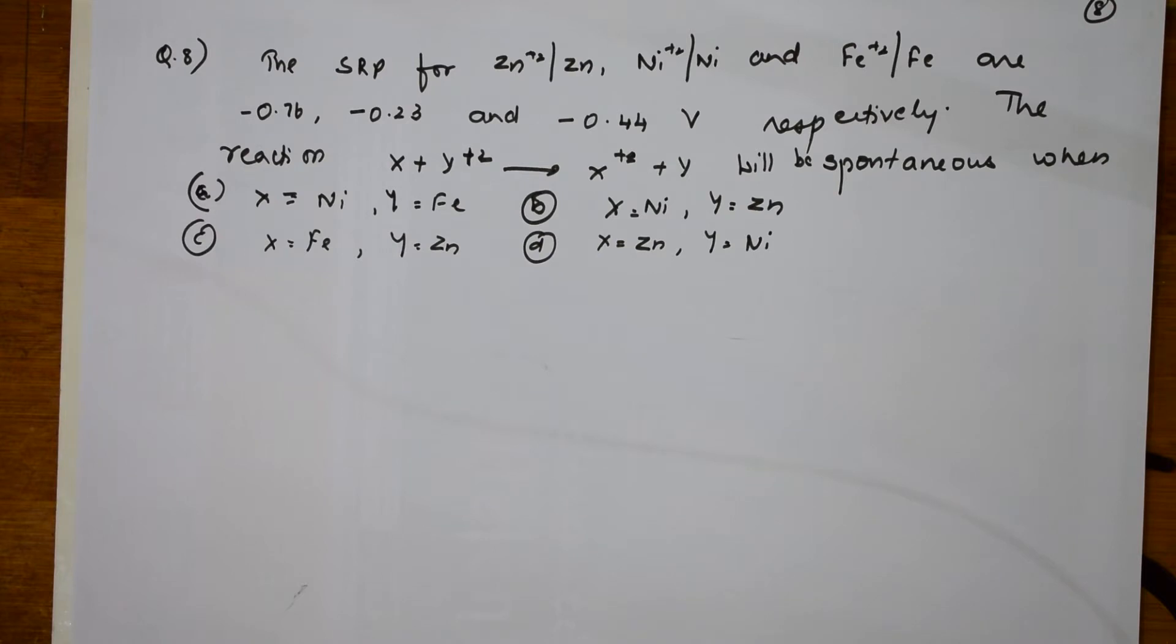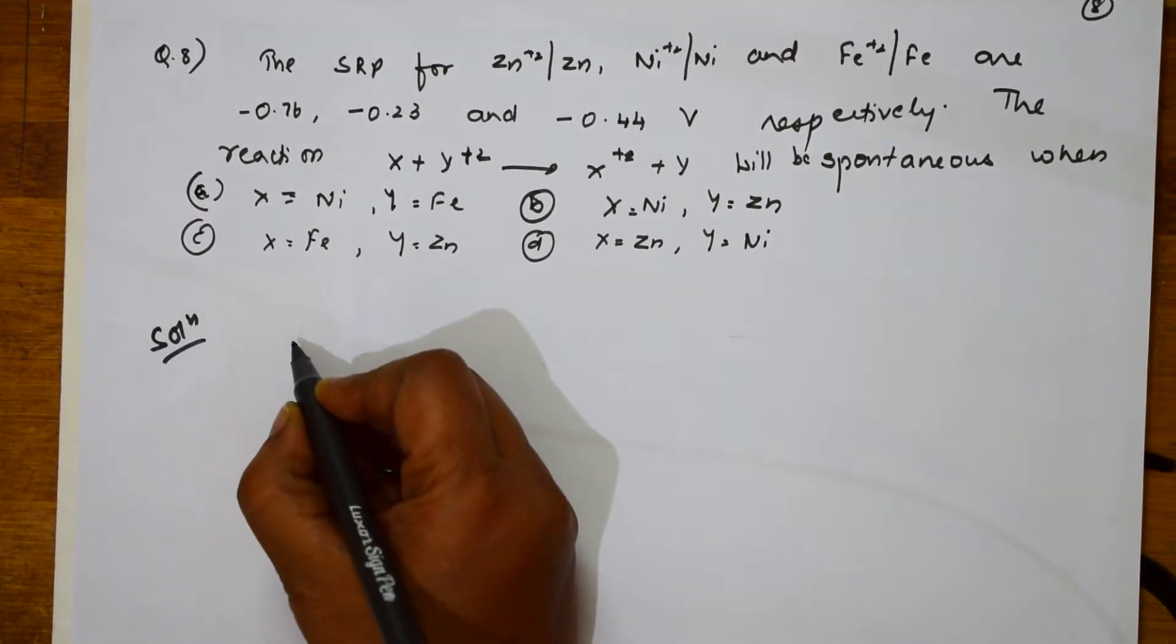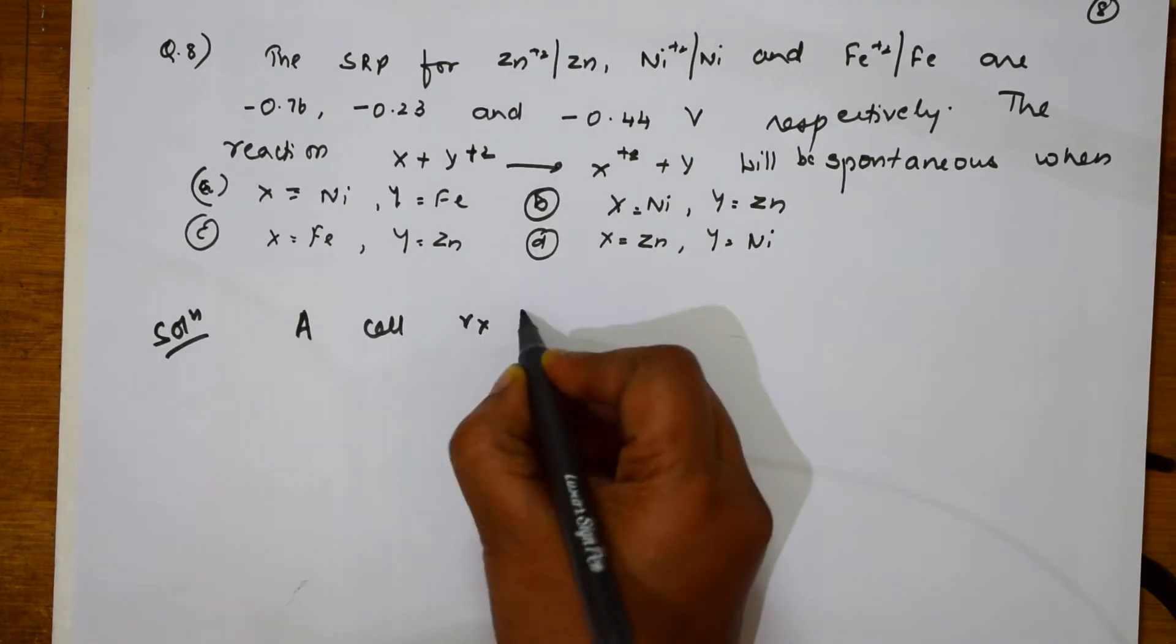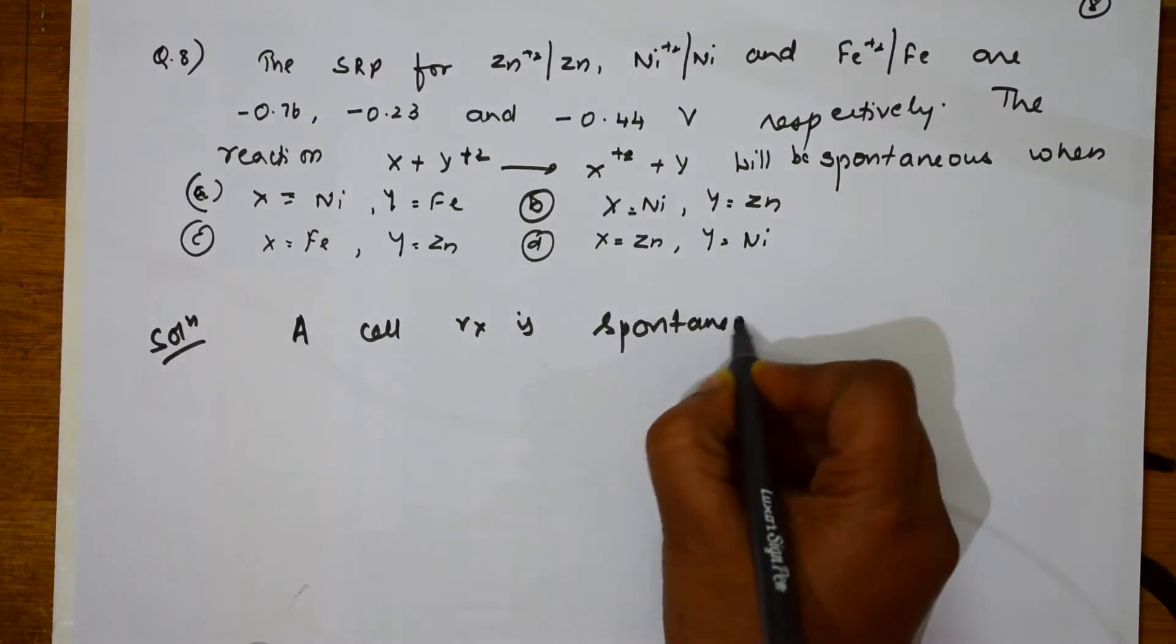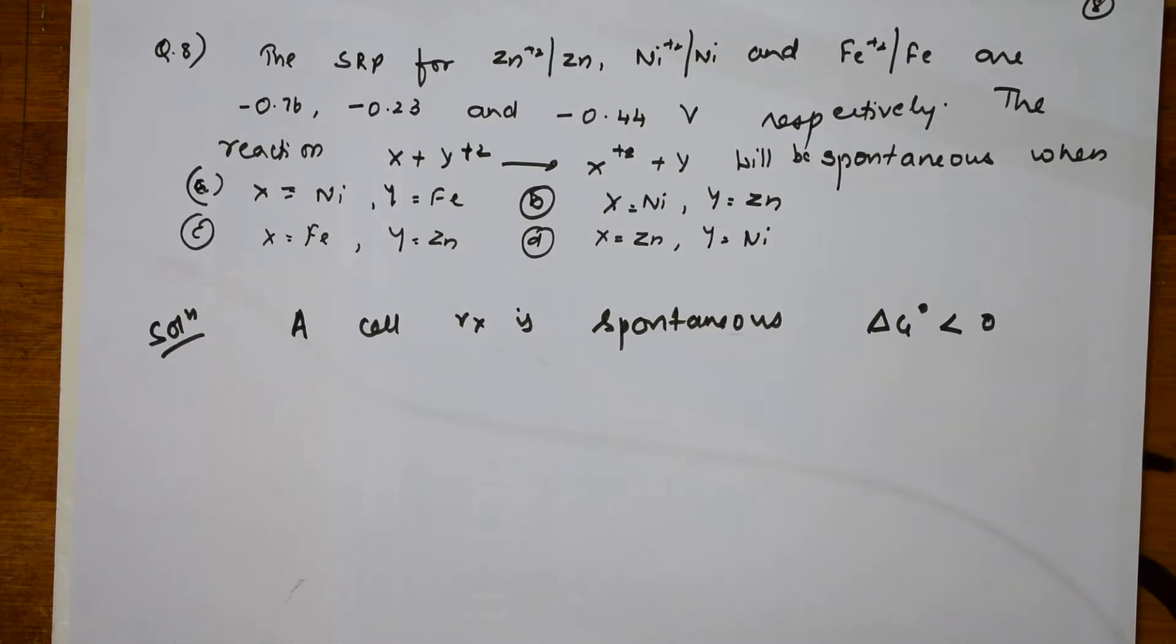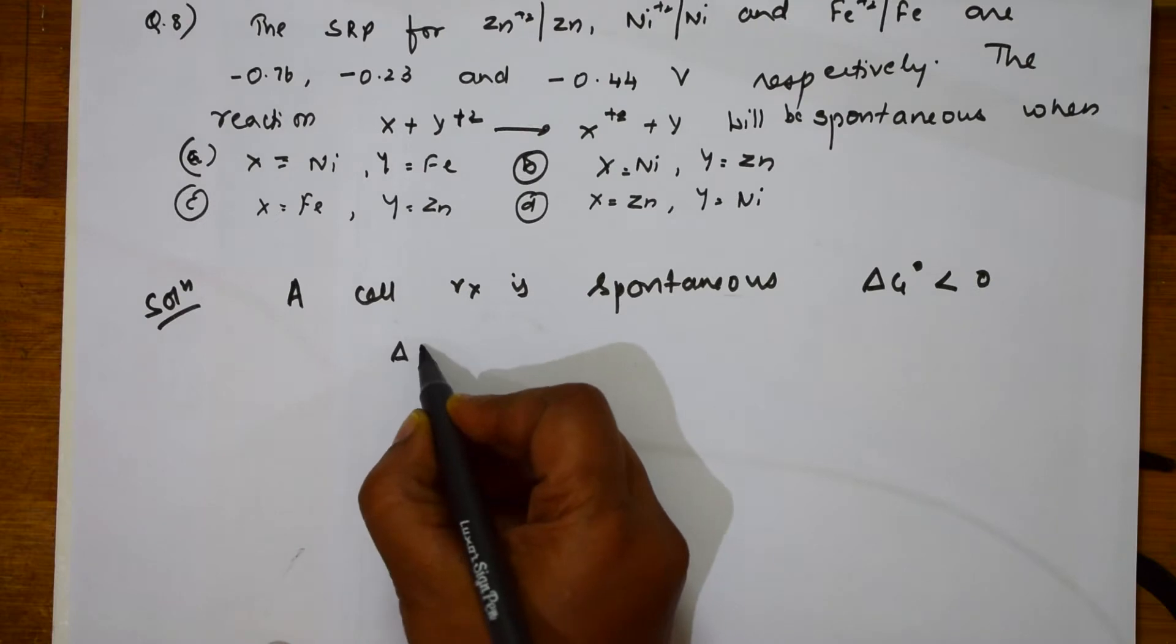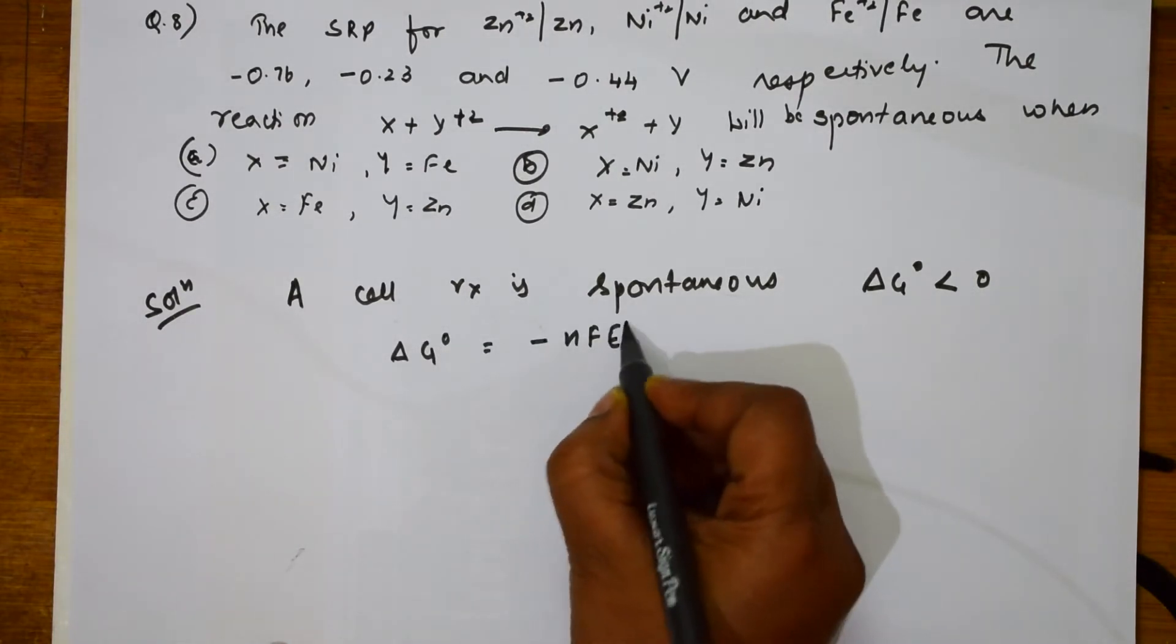Let me see how to solve this. First important thing: when is a cell reaction spontaneous? First rule, thumb rule is a cell reaction is spontaneous when delta G naught is less than 0. If it is negative then only it is spontaneous. We have also learned one formula. What is the formula?